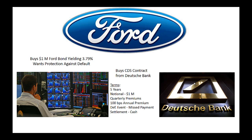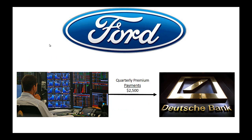This is all hypothetical, but imagine the terms on this CDS contract are: five years, notional amount of $1 million, quarterly premium payments from the buyer to the seller, annual premium of 100 basis points, the default event is a missed interest payment, and settlement is cash. That means every quarter, this investor is going to have to pay $2,500 to Deutsche Bank — because 1% of $1 million is $10,000 per year, so $2,500 per quarter.